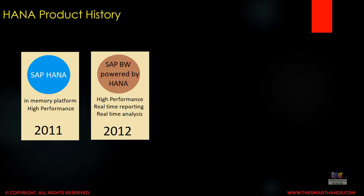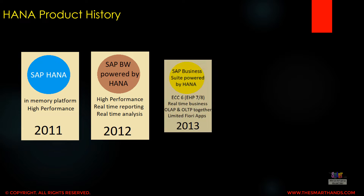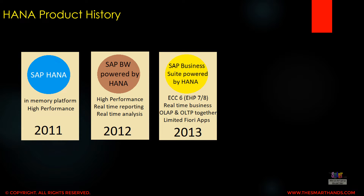Real-time reporting and real-time analysis were provided with BW on HANA. In 2013 they launched SAP Business Suite powered by HANA, running on ECC6 eHP7 or 8 at minimum. This provided real-time business with OLAP and OLTP — Online Analytical Processing and Online Transaction Processing — together in one system, along with some limited Fiori apps.